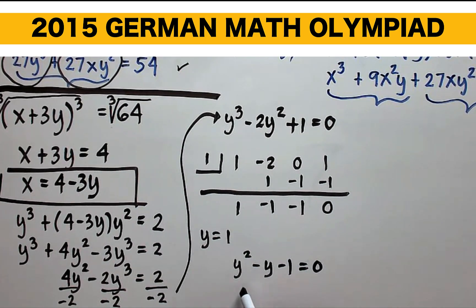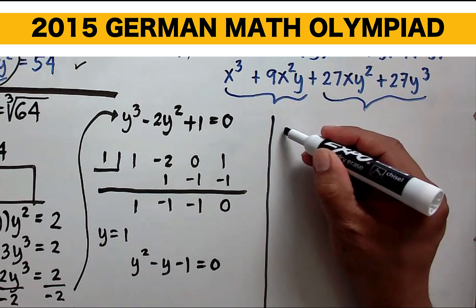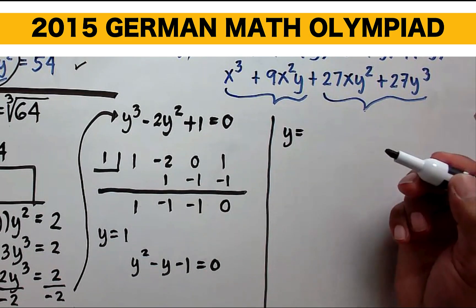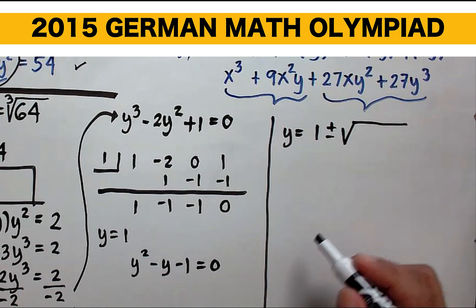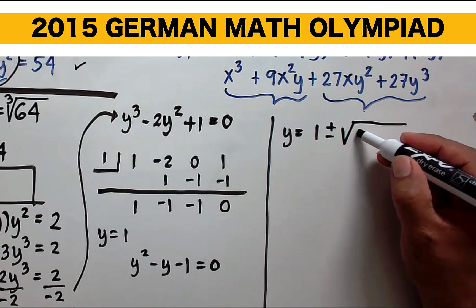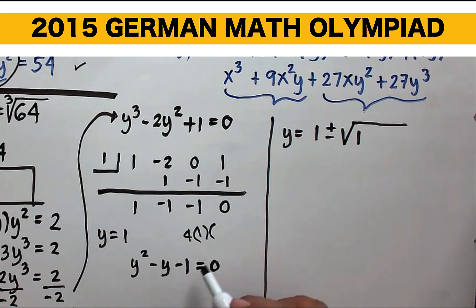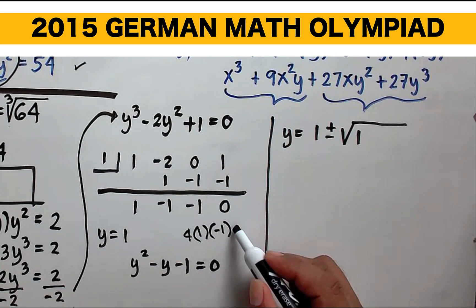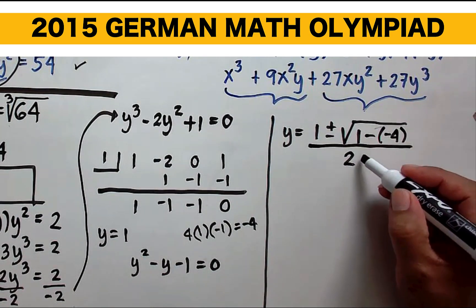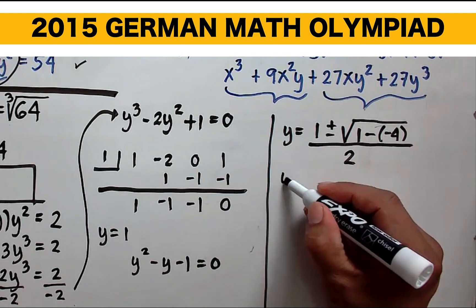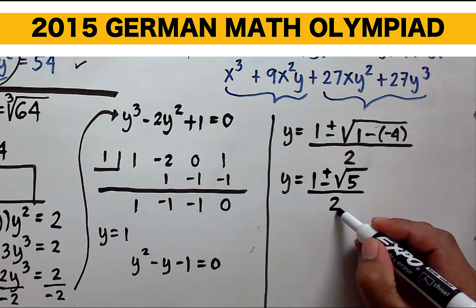Using the quadratic formula, the roots of y squared minus y minus 1 equals 0 give us the golden ratio. y equals negative b, where b is negative 1, so that becomes positive 1, plus or minus the square root of b squared minus 4ac. b squared is 1, and 4 times 1 times negative 1 is negative 4, so we have 1 plus or minus the square root of 1 plus 4, all over 2a, which is 2. This equals 1 plus or minus the square root of 5, over 2, which is the golden ratio.